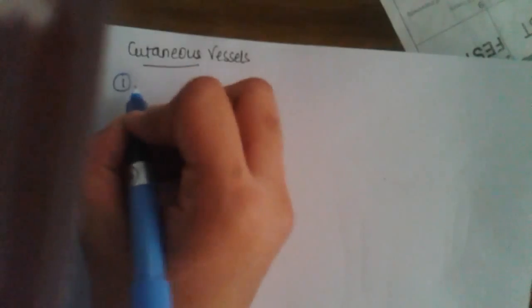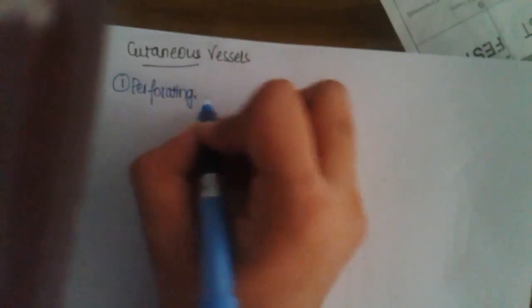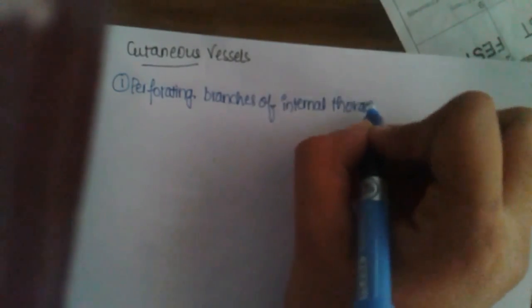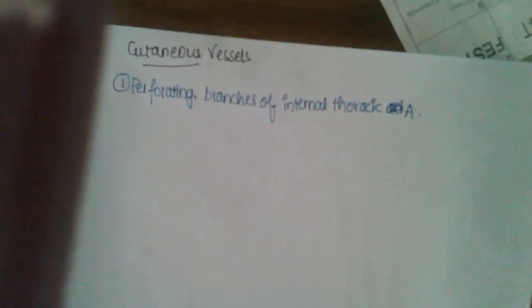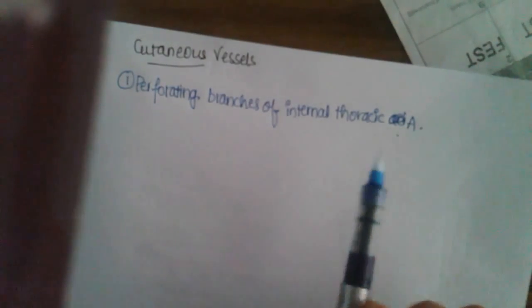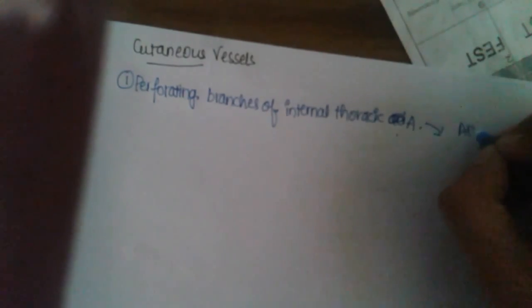Next, let us learn about the cutaneous vessels. These cutaneous vessels are very small. They supply the fascia, the breast, and surrounding areas. The first are the perforating branches of the internal thoracic artery — I will use 'A' to denote artery from now. The perforating branches of the internal thoracic artery mainly supply the anterior cutaneous nerves and the medial part of the chest.